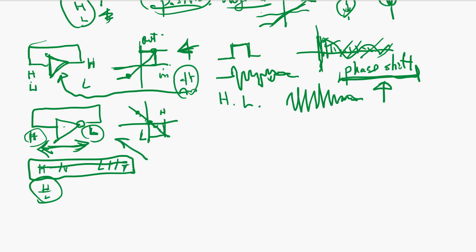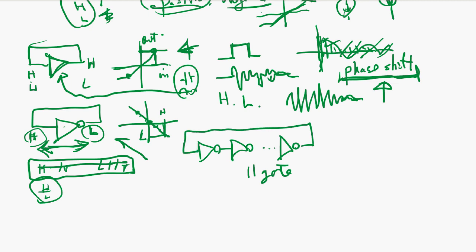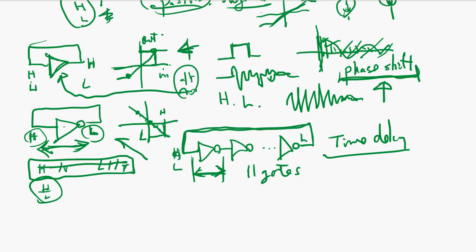Suppose you have 11 inverter gates in a chain and bring the output back — this is called a ring oscillator. When you make an IC chip, the first thing to do is make a ring oscillator and check: the frequency divided by 11 gates gives the fastest gate speed for that IC chip process. This is negative feedback, but there is a time delay factor. The time delay causes oscillation because the signal flips high-low-high through the chain, comes back and flips again, so it oscillates.